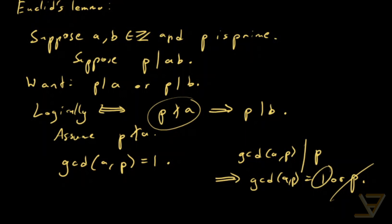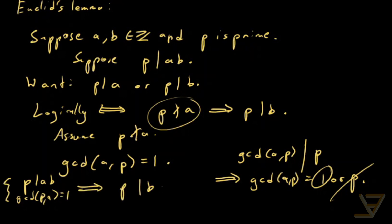And you can see that Gauss's lemma is now going to come into play, because we know that P divides AB and GCD(P, A) is equal to 1. So together, Gauss tells us that P divides B. So we can reinterpret that into saying that either P divides A, and if not, then P divides B.